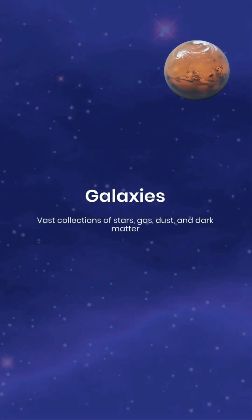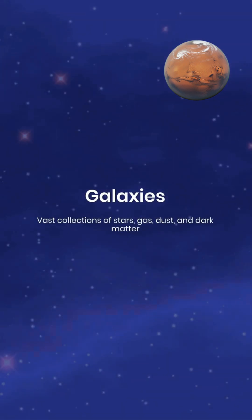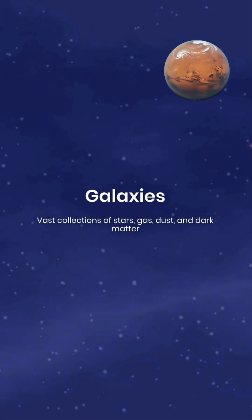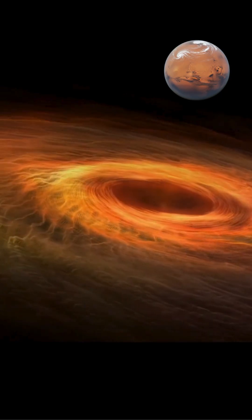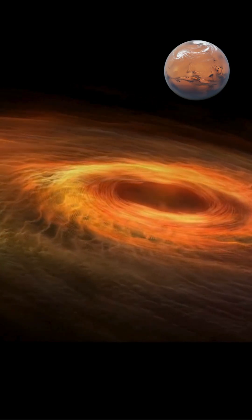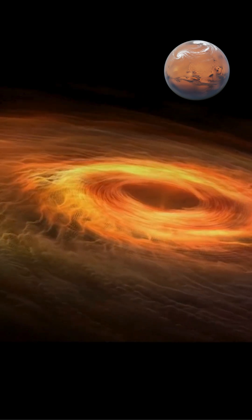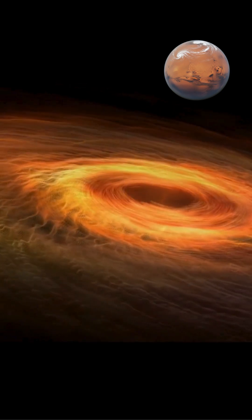Galaxies, those vast collections of stars, gas, dust, and dark matter, come in a stunning variety of shapes: spirals with sweeping arms, smooth ellipsoids, and irregular forms with no clear structure.